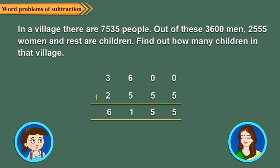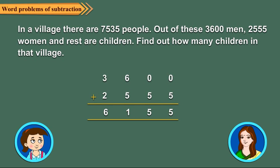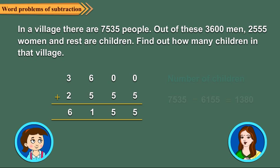Here, the total number of people is 7,535. So we get the number of children is equal to 1,380.